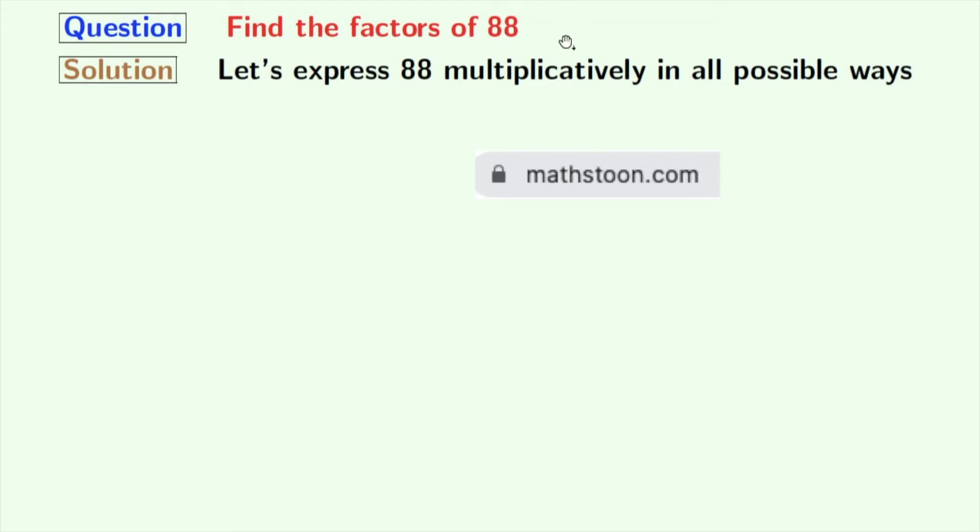At first, we will find all the possible ways in which we can express 88 multiplicatively. Look that 88 can be expressed as 1 times 88. As 88 is an even number, it will be divisible by 2, and we can express 88 as 2 times 44.